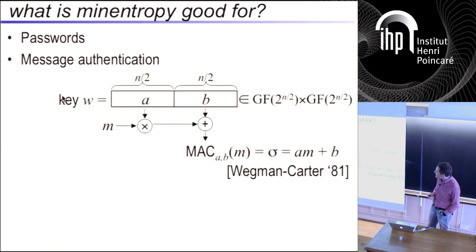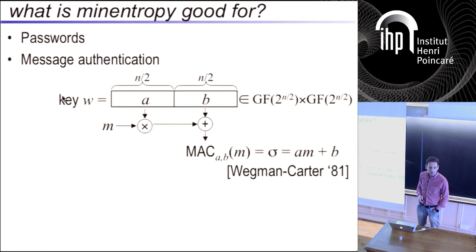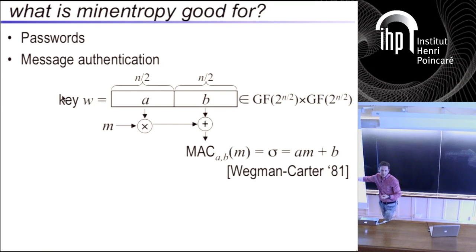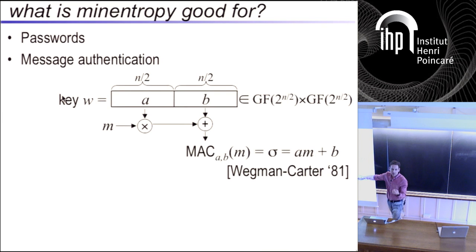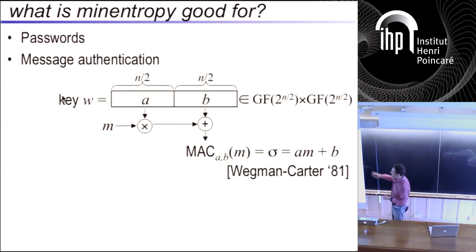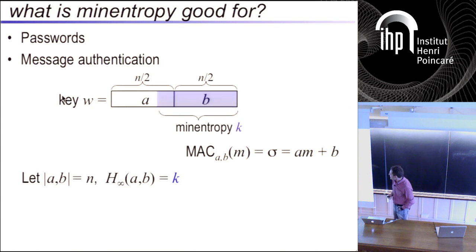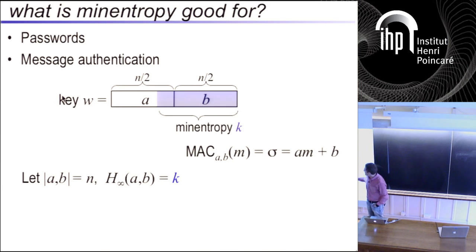If the key is uniform, then Wegman and Carter show that this is a good message authentication code. Message authentication means: I'm going to send a message to you, we both share the same secret key, and Evgeny the adversary wants to modify the message, does not know the secret key, and now has to modify the message in sync with sigma, because you're going to verify that sigma is correct. Any modification to the message has to be reflected in sigma, otherwise you'll detect. It's going to be hard for him.